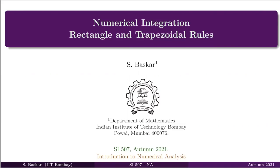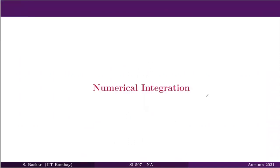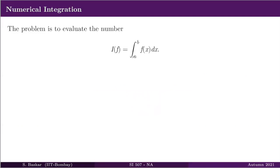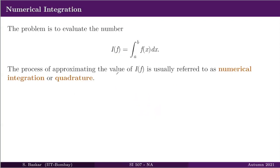We have finished the interpolation chapter and are now into numerical integration. Given that we have understood polynomial interpolation of a given function, it is not very difficult to understand how to derive formulas for numerical integration. Our aim is to find the value of the integral from a to b of f(x) dx for a given function f defined on the interval [a, b]. We use the notation I(f) to denote the exact value of this integral.